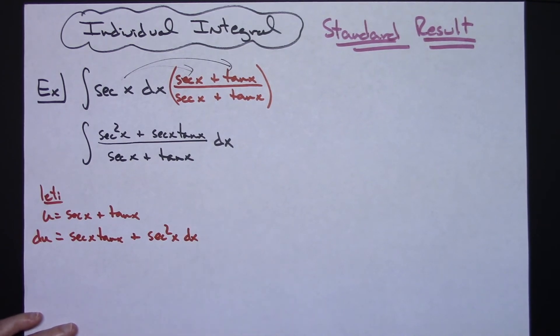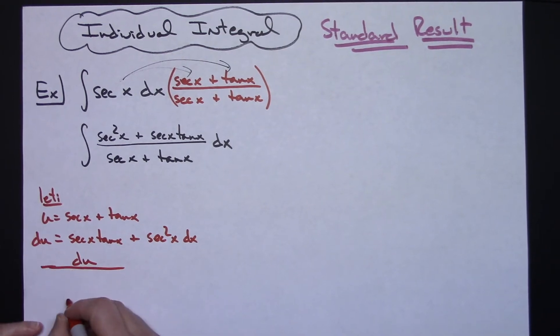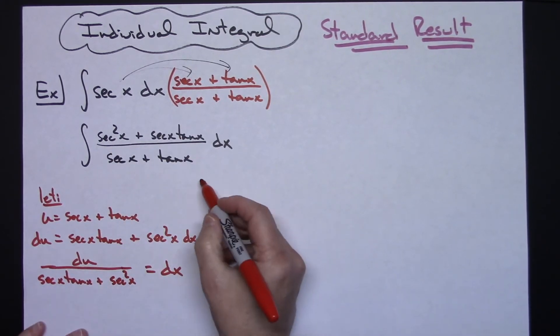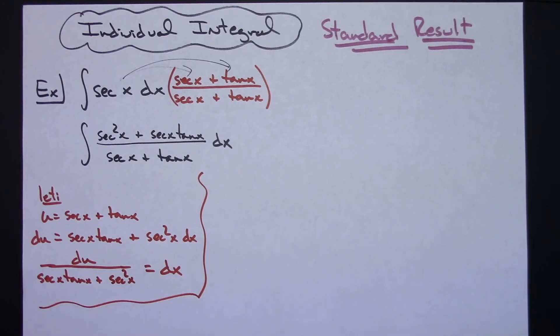If I want to go ahead and solve for dx, then I would have du over secant x tangent x plus secant squared x. And then that equaling my dx. And then granted this is in the opposite order, but since it's just addition, it really doesn't matter at that point.